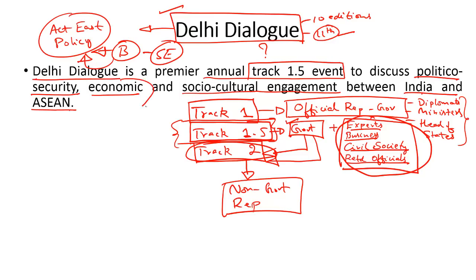In the case of the Delhi dialogue, it is a Track 1.5 initiative, which means that it has participation from government officials and representatives as well as from strategic experts, business leaders in the region, members of civil society, retired officials, etc.